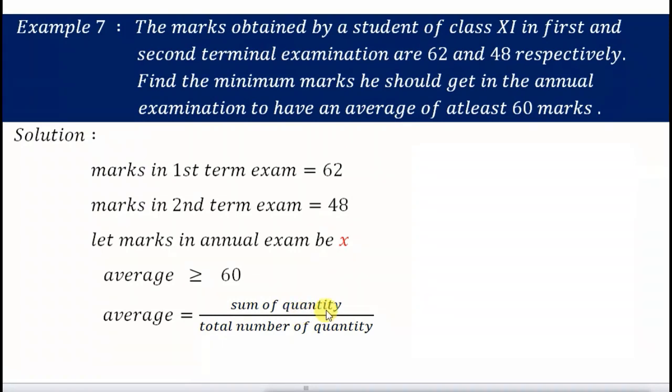So what is the sum of marks? There are 3 exams, so there will be 3 marks: 62, 48, and the annual exam which is not done yet, so let it be X. There are 3 number of marks. That's how you find the average. And your mom wants it to be greater or equals to 60.